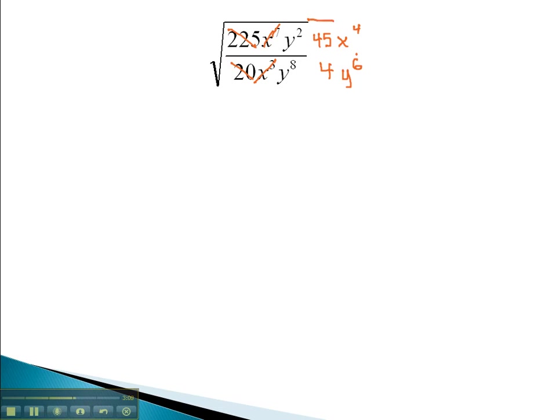Let's now write this as two separate radicals. In the numerator, what's left is just the square root of 45 x to the 4th. In the denominator, what's left is the square root of 4 y to the 6th. We are now ready to simplify the individual radicals.